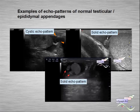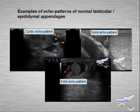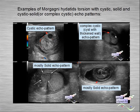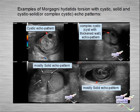Some examples of normal echo patterns of appendages: we can see a cystic echo pattern with pedicle, a solid echo pattern, and two other solid echo patterns. Pathology examples of torsion of testicular appendages include a cystic echo pattern, a complex cystic echo pattern like a cyst with thickening of the wall, and solid echo patterns.